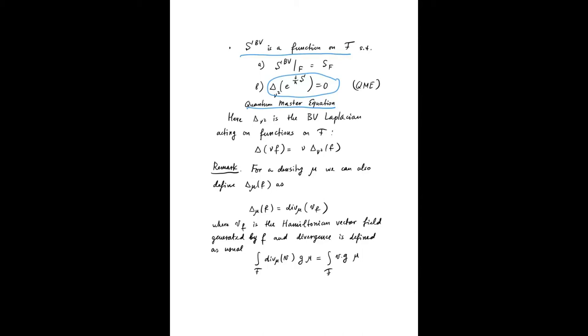Here in this quantum master equation, I used a different version of the BV Laplacian. It's the BV Laplacian acting on functions on F. This BV Laplacian is not canonical. You should have extra data to define this BV Laplacian. And the extra data is the density μ, which is μ squared. The definition of this non-canonical BV Laplacian is the following: if you act by the canonical BV Laplacian on half-density μ times the function F, you will have this half-density μ again times the action of the non-canonical BV Laplacian on the function F.